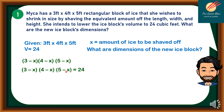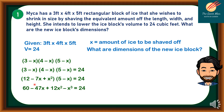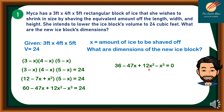We will equate this to 24 as the volume. We will distribute (3 minus x) to (4 minus x), which gives us (12 minus 7x plus x²) times (5 minus x) equals 24. Distributing (5 minus x) to the expression (12 minus 7x plus x²), we come up with 60 minus 47x plus 12x² minus x³ equals 24. We then move to simplify this equation by subtracting both sides by 24, giving us 36 minus 47x plus 12x² minus x³ equals 0.